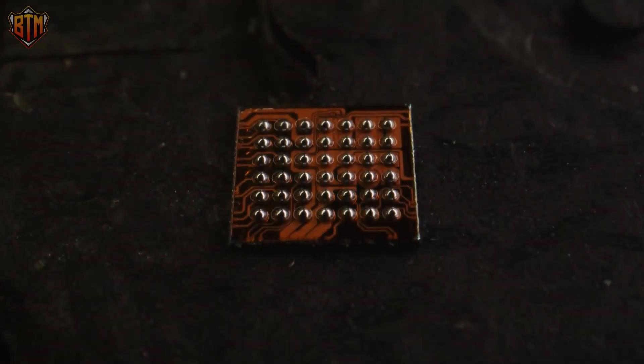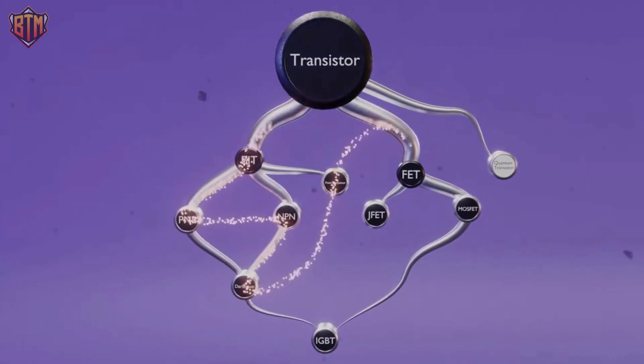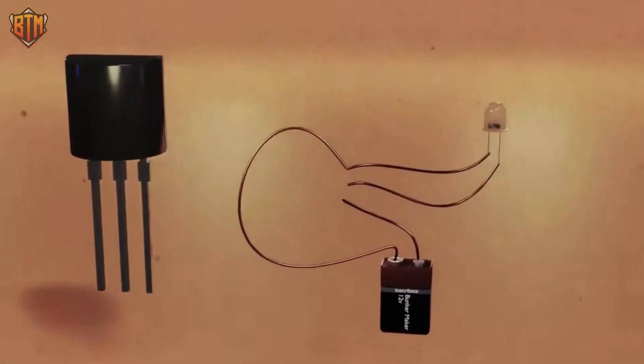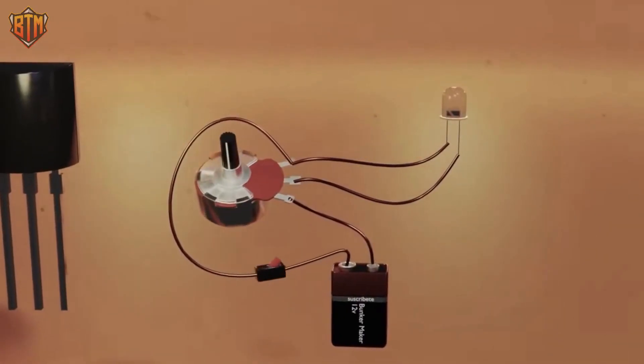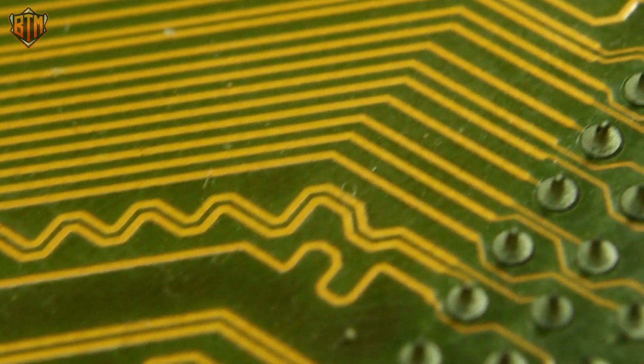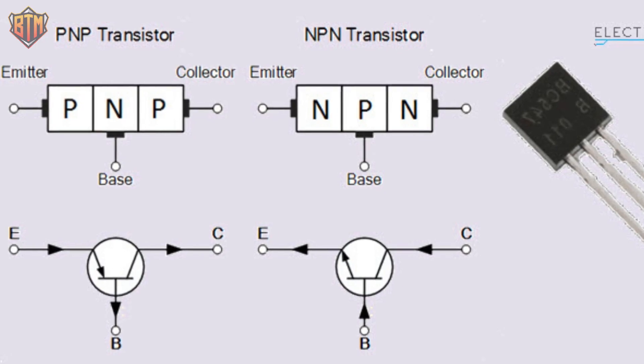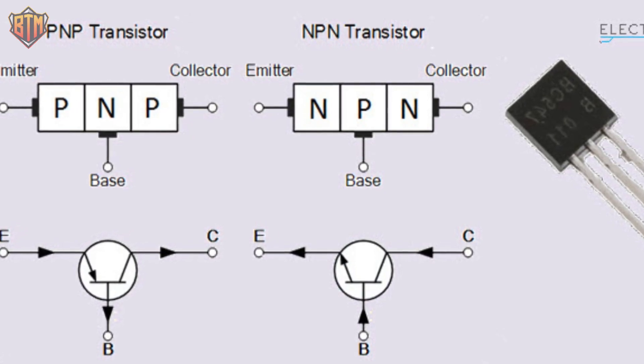How does a transistor operate? A transistor can be either simple or complex, depending on your perspective and level of technological knowledge. A transistor is a tiny electrical component with two distinct functions. It can function as a switch or an amplifier.